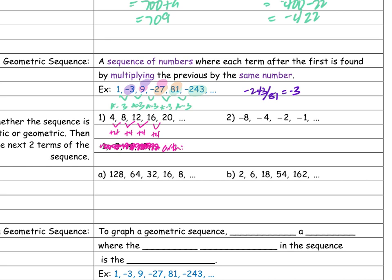What are my next two terms in that sequence? If I'm just adding 4 — what's the last term? 20. And what am I doing every time? Adding 4. So my next term is 24. And the one after that is 28. You do know — good job.